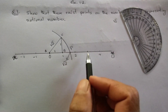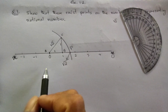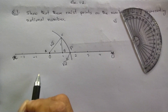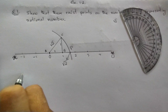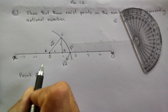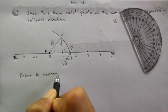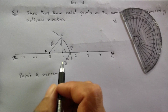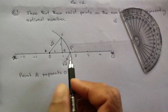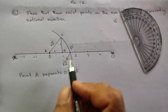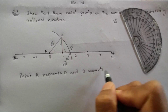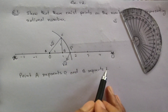Now, the number line is set up to find a number. Point A represents 0, and point B represents 1. So here we go — point A represents 0 and B represents 1 on the number line.